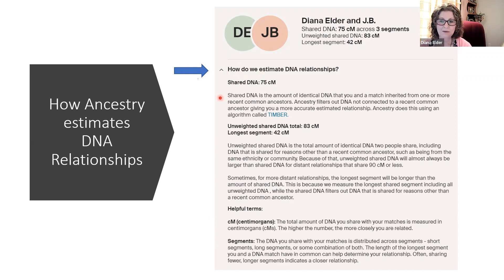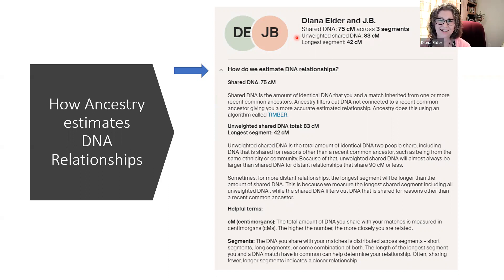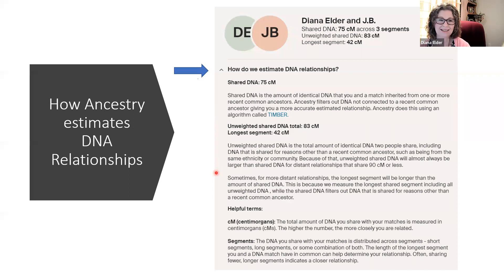One thing to keep in mind: you will see no difference between shared and unweighted DNA if the match is over 90 centimorgans — there will be no difference. But anything under 90 will have a difference. It could be slight, as in this case, or it could be more significant. Let's take a look at some of the details that go into these two different numbers.